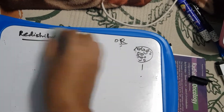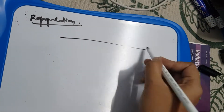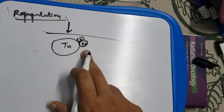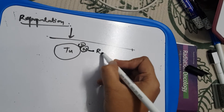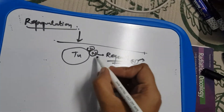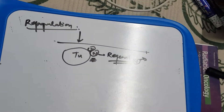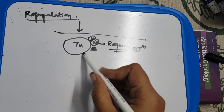Now, repopulation. When you give a fraction of radiation, normal cells receive radiation. Due to the repair concept, if given a little more time, they will regenerate and proliferate — these are the surviving fractions. However, if the treatment duration is prolonged, tumor cells can also recover from acute radiation reactions.